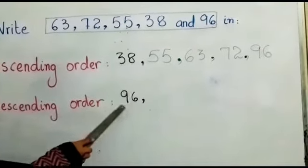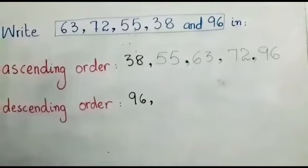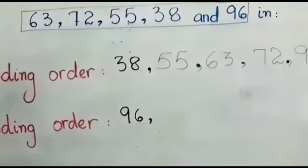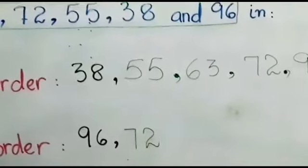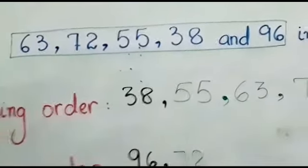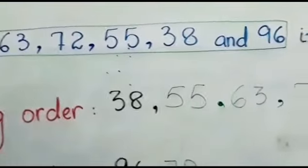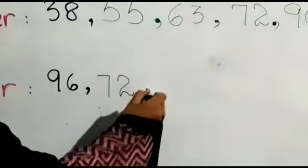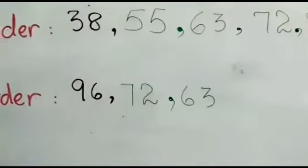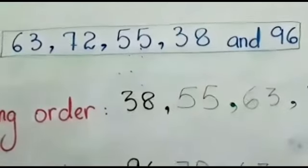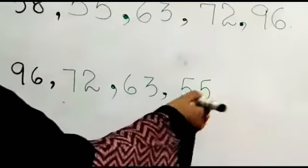After 96, which number is smaller? After 72, excellent students, after 72, 63. 63 is smaller than 72. After 63, the number is 55.